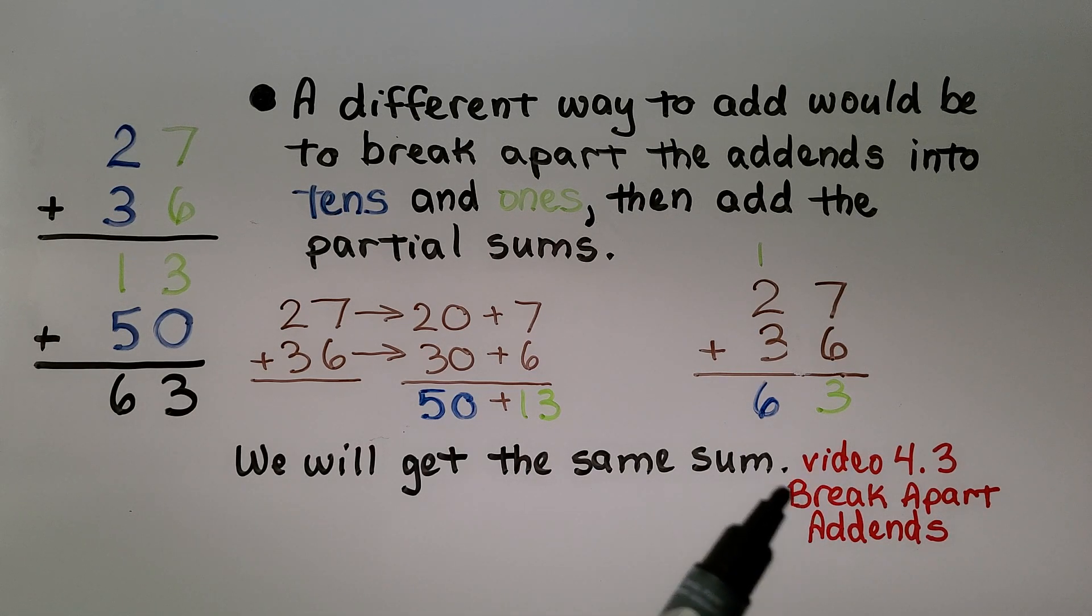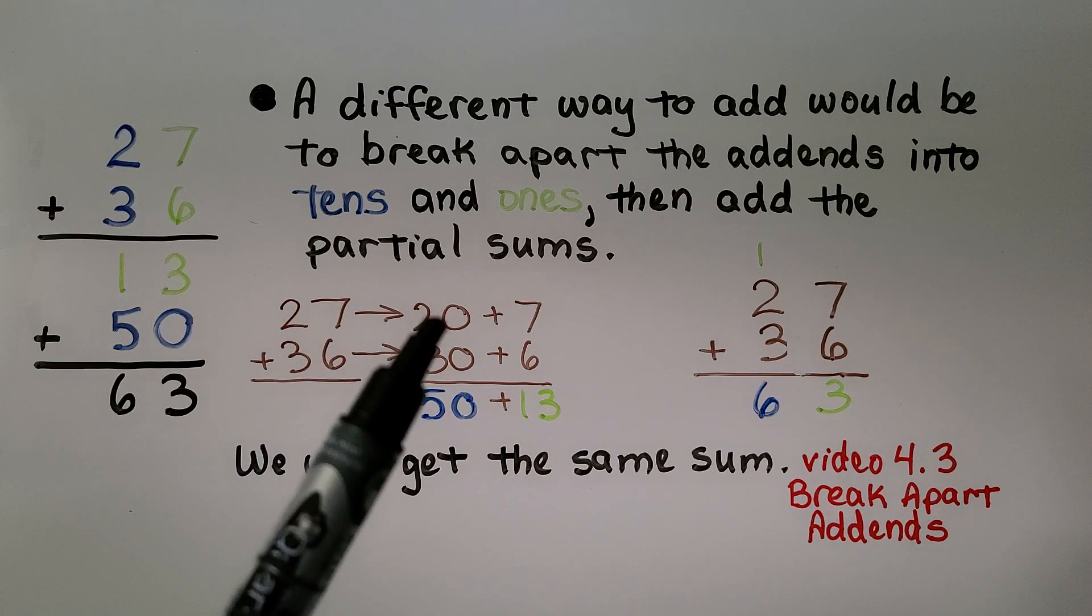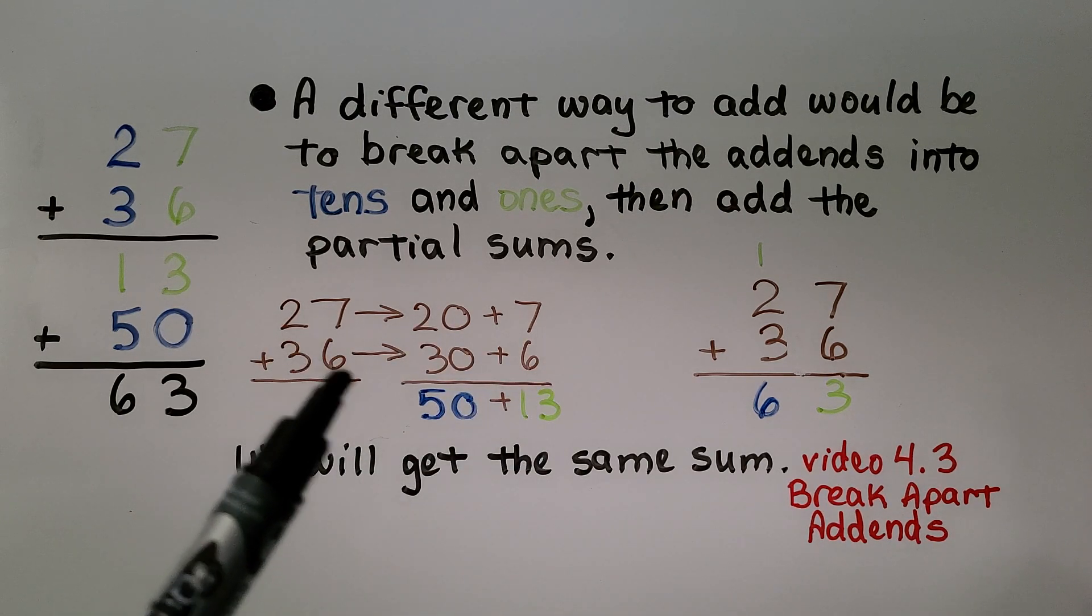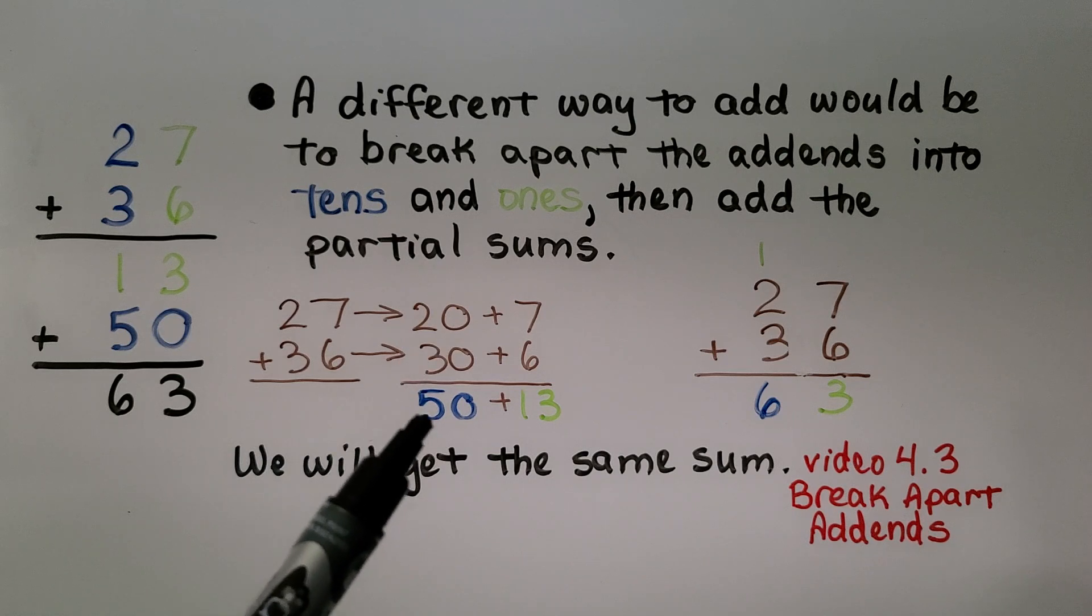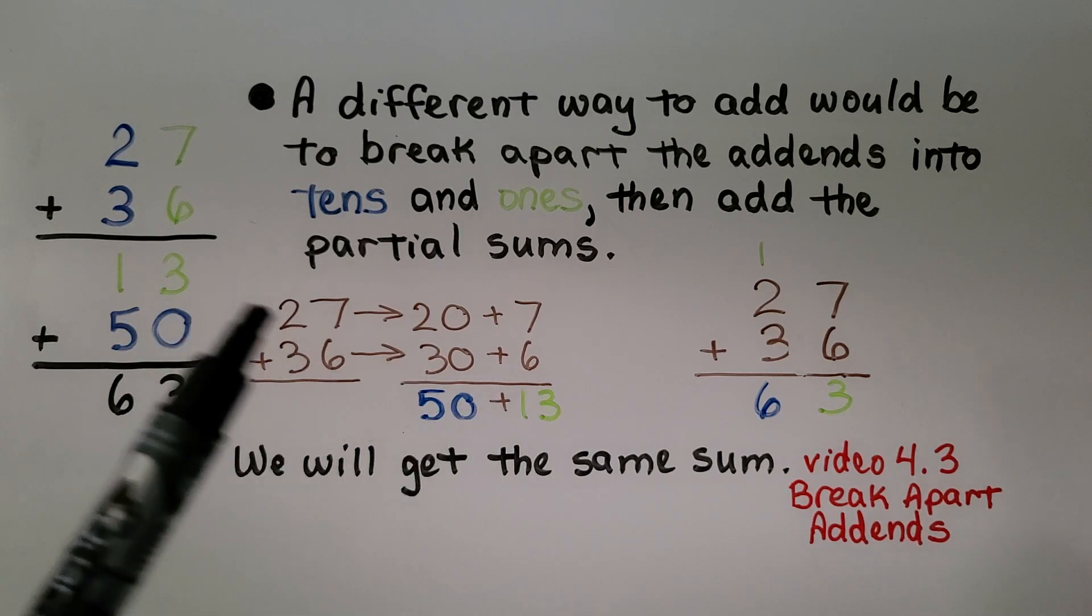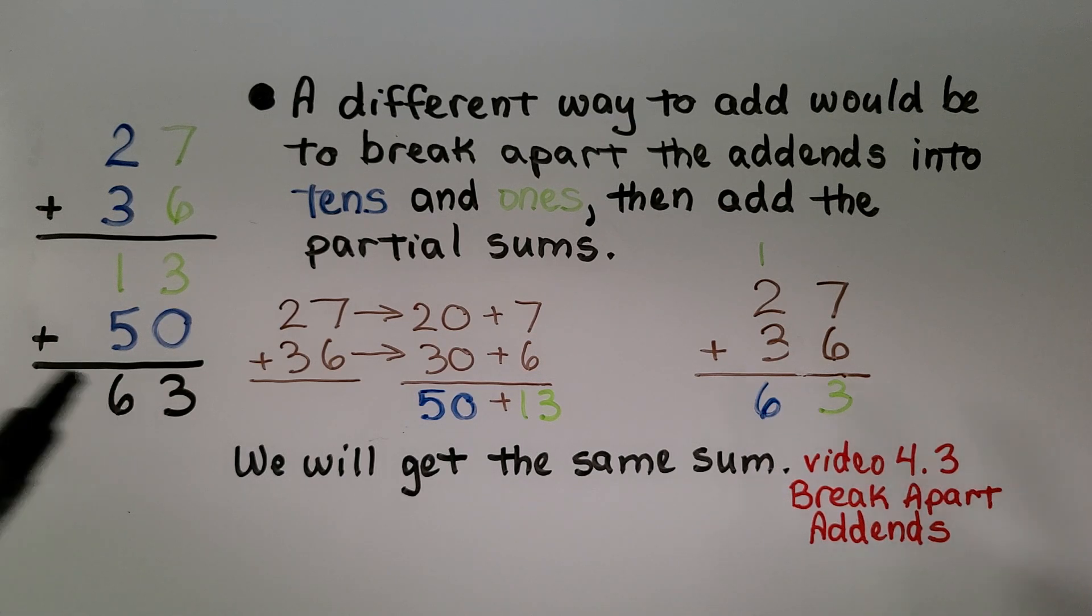If you remember back from lesson 4.3 where we did break apart the addends, we did 27, which is 20 plus 7, and 36, which is 30 plus 6. We added the 7 plus 6 to get 13, and the 20 plus 30 to get 50. Do you see what we did here? And 50 plus 13 is equal to 63.